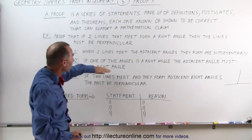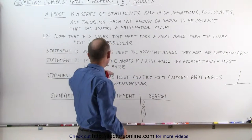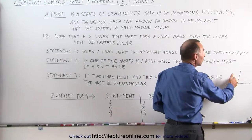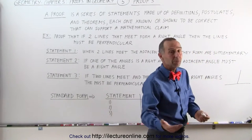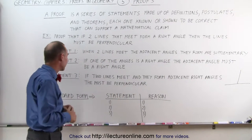Statement two: If one of the angles is a right angle, the adjacent angle must also be a right angle. If one of these is 90 degrees, and we know that they add up to 180 degrees, then, of course, the other one must be 90 degrees as well. That means they're both right angles.